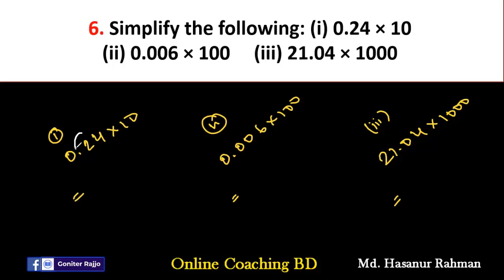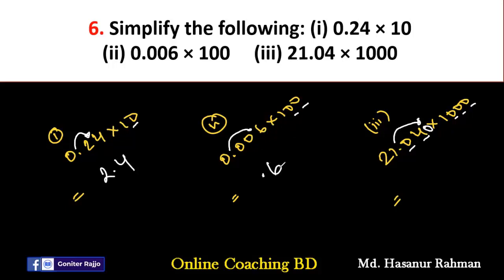When multiplying by 100, we move the point two digits to the right — because we count the zeros. Here there are two zeros, so we move two digits right. For 1000, there are three zeros, so we move three digits right. If there aren't enough digits after the point, we add extra zeros. So: 0.24 multiplied by 10 is 2.4; 0.006 multiplied by 100 is 0.6; and 21.040 multiplied by 1000 is 21040.